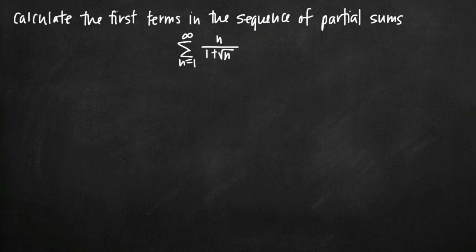Today we're going to be talking about how to calculate the first several terms in a sequence of partial sums. In this particular problem, we've been asked to calculate the first several terms of this sequence: n divided by 1 plus the square root of n, from n equals 1 to infinity.